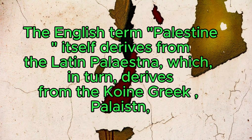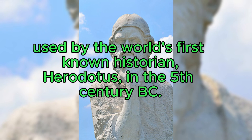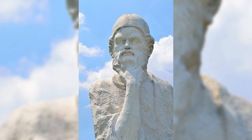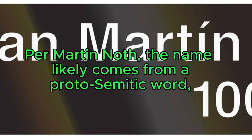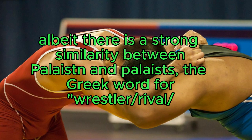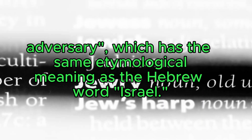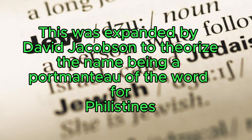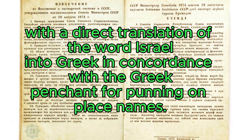The English term Palestine itself derives from the Latin Palaestina, which in turn derives from the Koine Greek Palaistine, used by the world's first known historian, Herodotus, in the 5th century BC. Per Martin Noth, the name likely comes from a proto-Semitic word, albeit there is a strong similarity between Palaistine and palaistes, the Greek word for wrestler, rival, or adversary, which has the same etymological meaning as the Hebrew word Israel. This was expanded by David Jacobson to theorize the name being a portmanteau of the word for Philistines with a direct translation of the word Israel into Greek, in concordance with the Greek penchant for punning on place names.